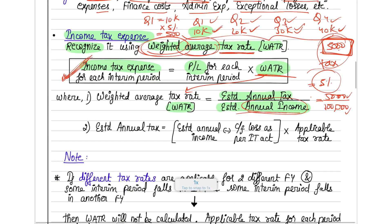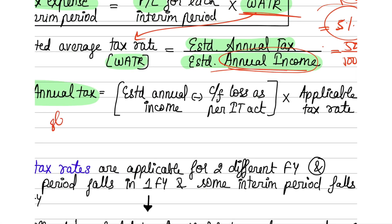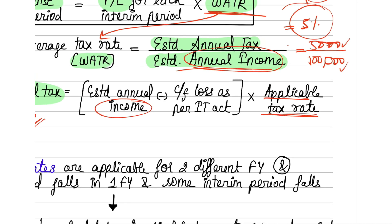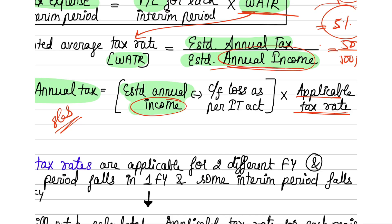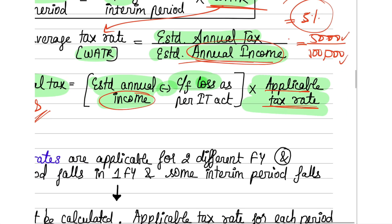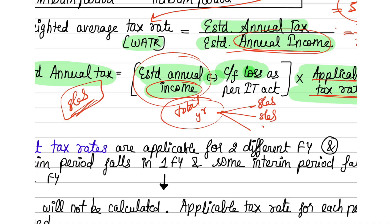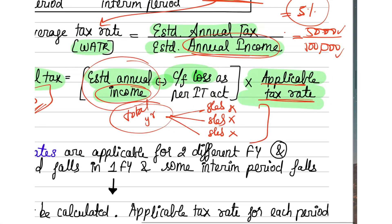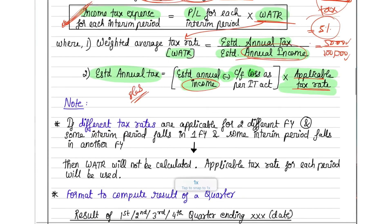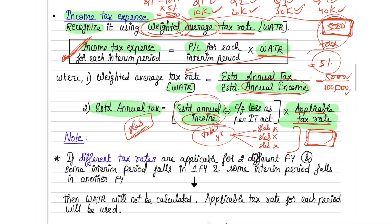To find the estimated annual tax: if a slab rate is given in the question, take the total income and multiply by the applicable tax rate. Otherwise, the formula is: (estimated annual income − any carry-forward loss) × applicable tax rate. If slab rates are given, split the total year income into the slabs and multiply each portion by the respective slab rate, then sum to get total tax.